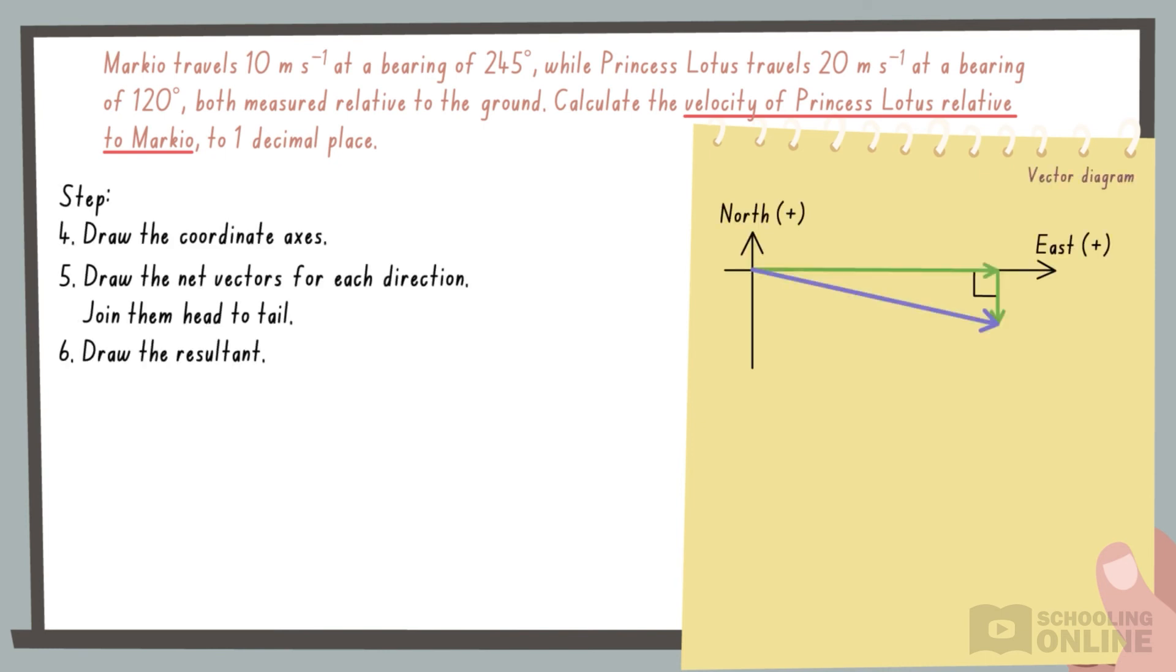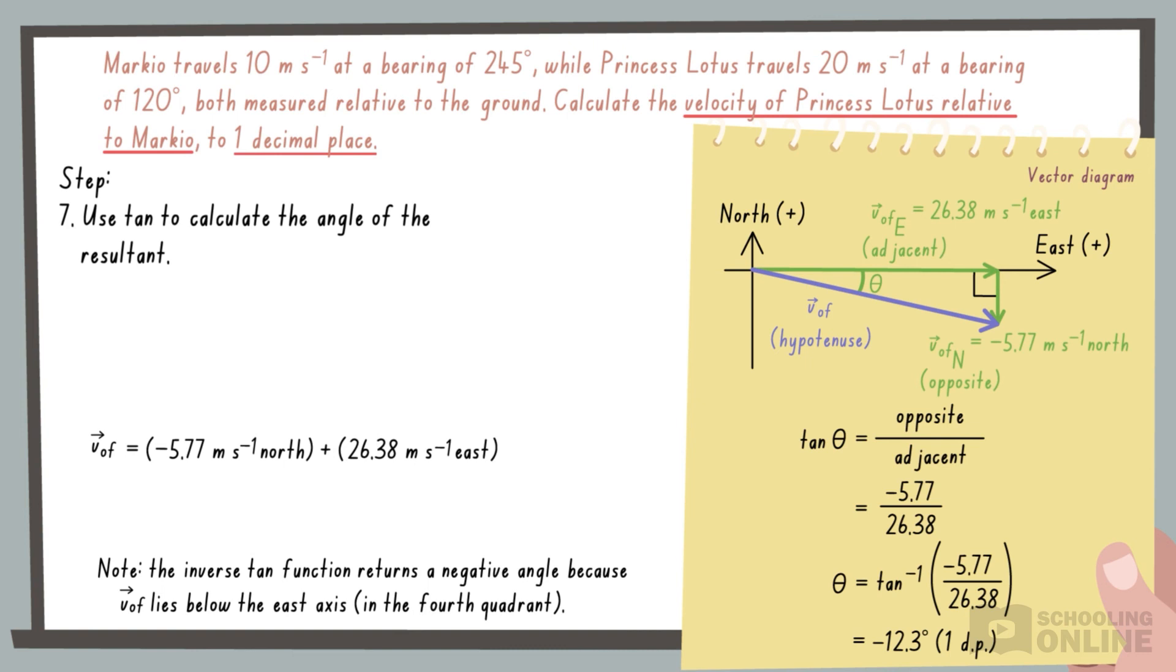Next, we draw the coordinate axes. The east component and the north component add to give the resultant VOF. Using trigonometry, we find that the angle inside the triangle is 12.3 degrees, which corresponds to a bearing of 102.3 degrees.